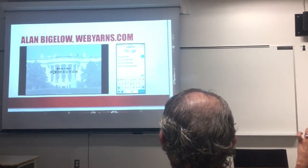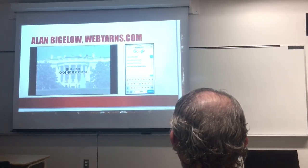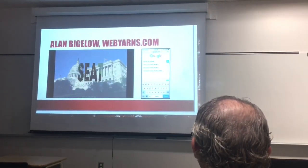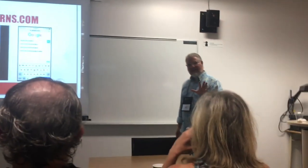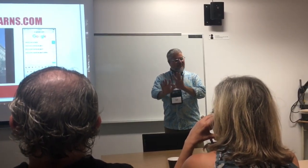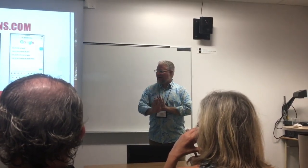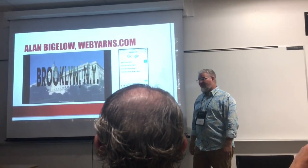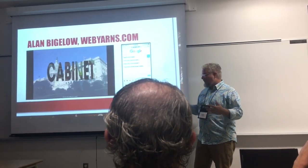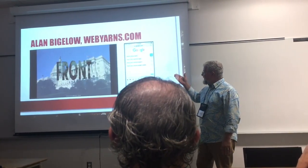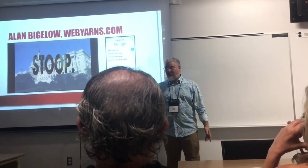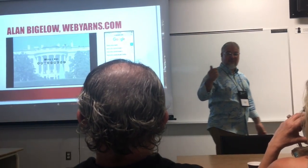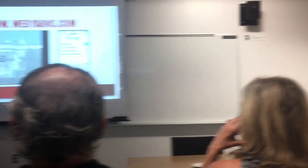Examples of third-generation e-lit: Alan Bigelow is an interesting example because he starts as a second-generation one, and when he leaves Flash behind, he moves into a third-generation set of poetics. This piece — How to Rob a Bank — which won the Kobus Award last year for best work of e-lit, is a slideshow. All you do is advance; there's no need for instructions, there's no need for inventing an interface as he did in his earlier Flash works.